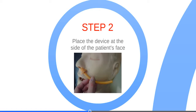Next, place the device at the side of the patient's face. Like the OPA, make sure to choose the device that extends from the corner of the mouth to the earlobe. Also, try to use the largest diameter that will fit in the nostril.